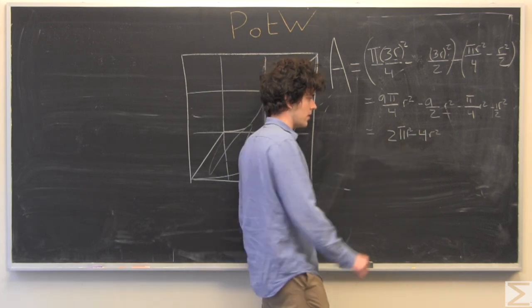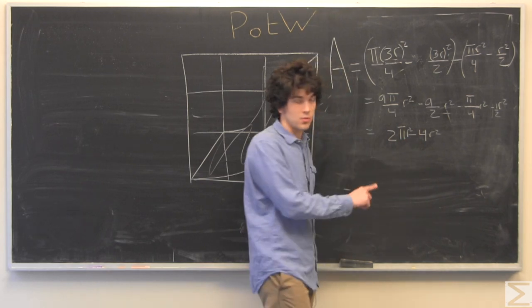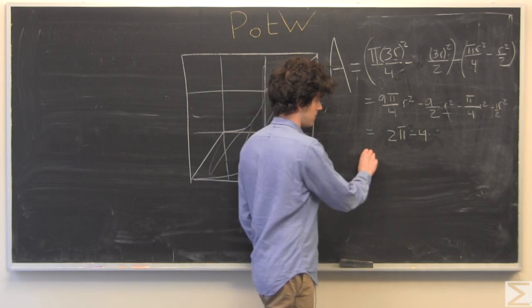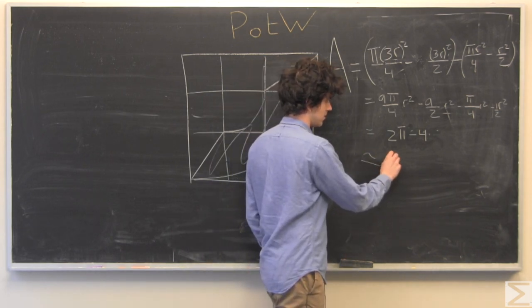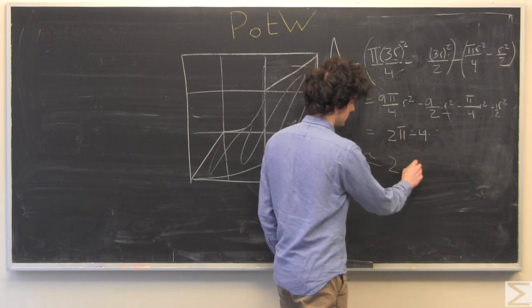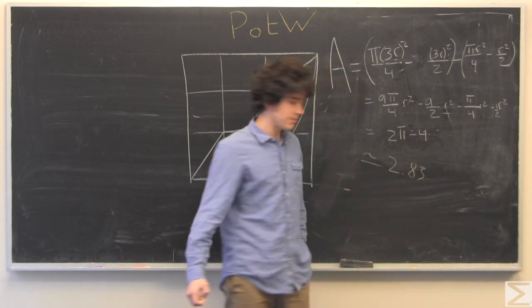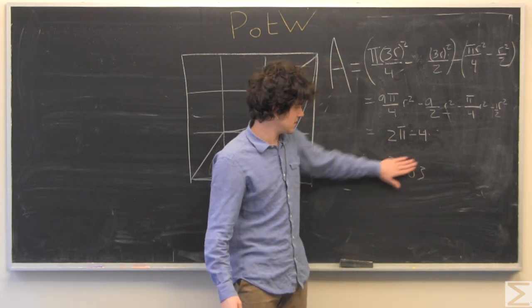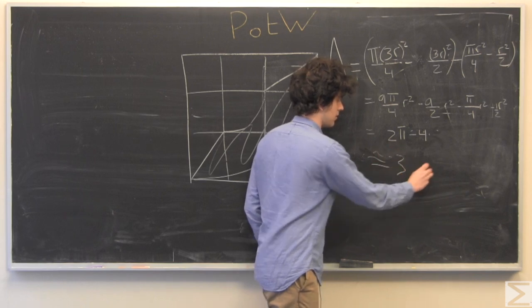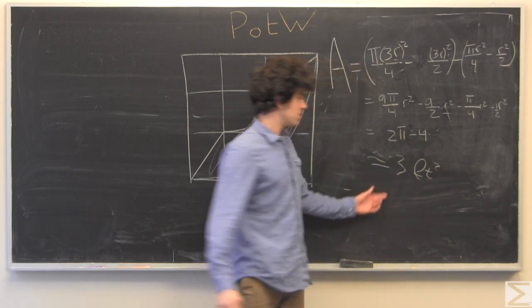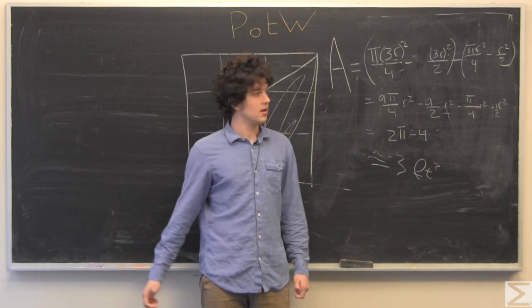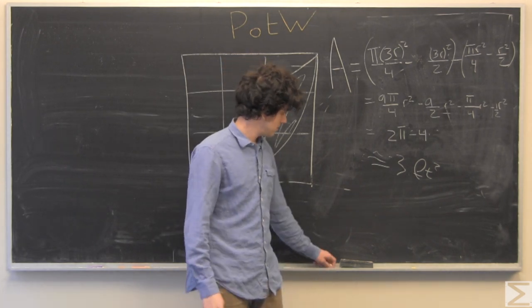Which since r is just one, r squared is one. So we have 2π minus 4, which is about 2.83. But you can just round that up to three feet squared if you're taking paper to clean up the spill.